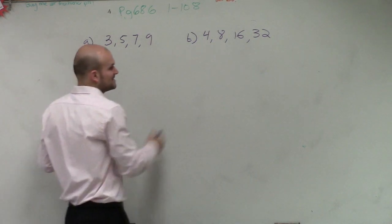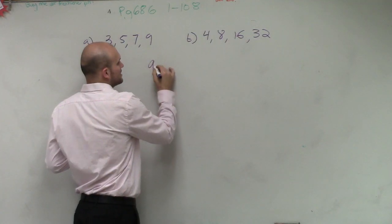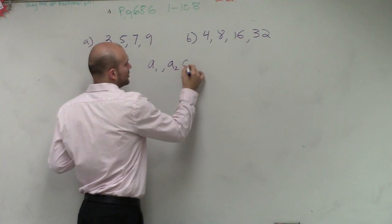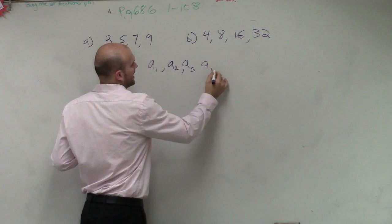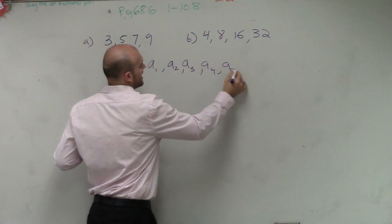So remember, ladies and gentlemen, we have two different types of sequences. If we have a sequence of numbers: a sub 1, a sub 2, a sub 3, a sub 4, a sub 5, dot dot dot.